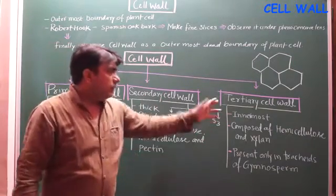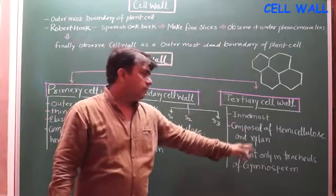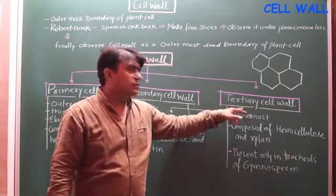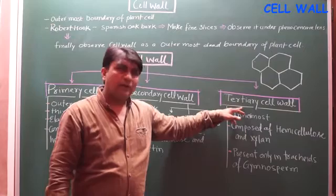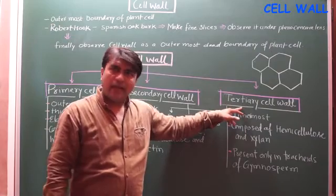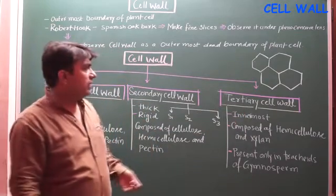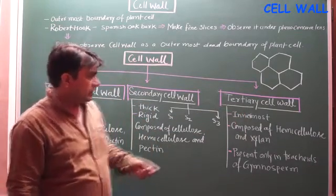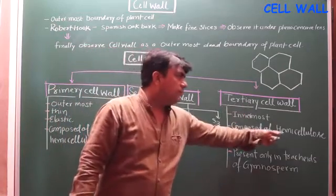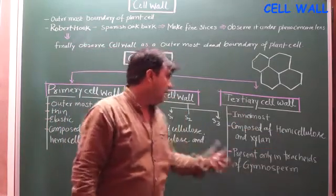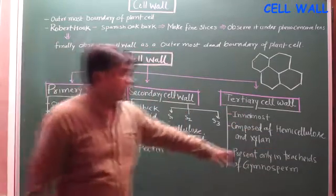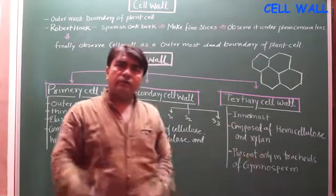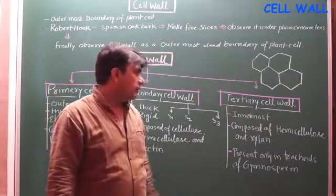Below the secondary cell wall, only in the case of gymnosperm tracheids, the tertiary cell wall is present. In any other cases, we do not find it. It is composed of hemicellulose, and another component is xylan.